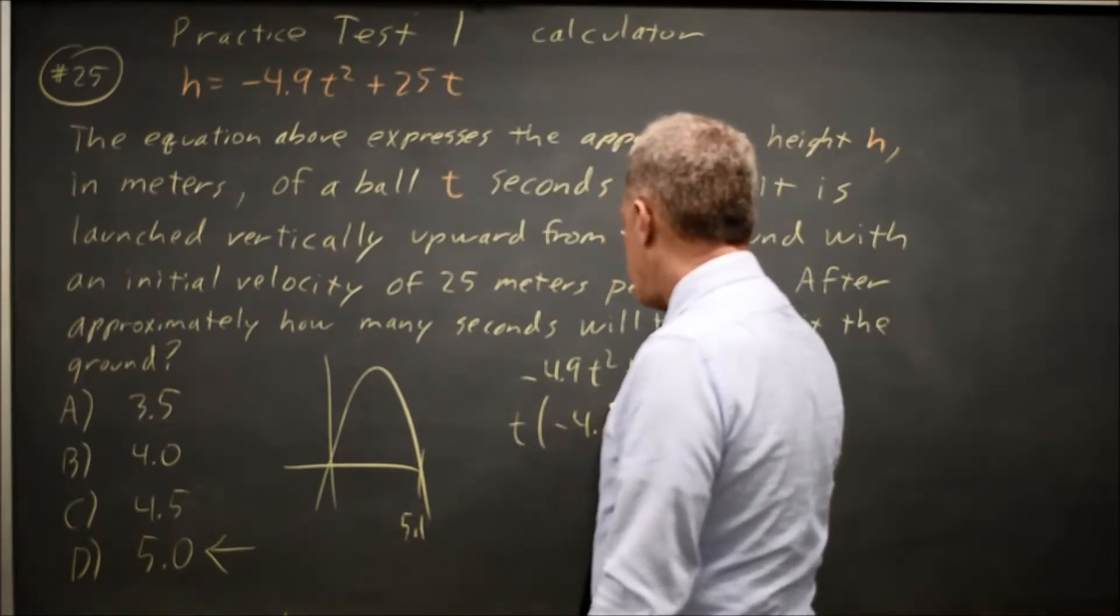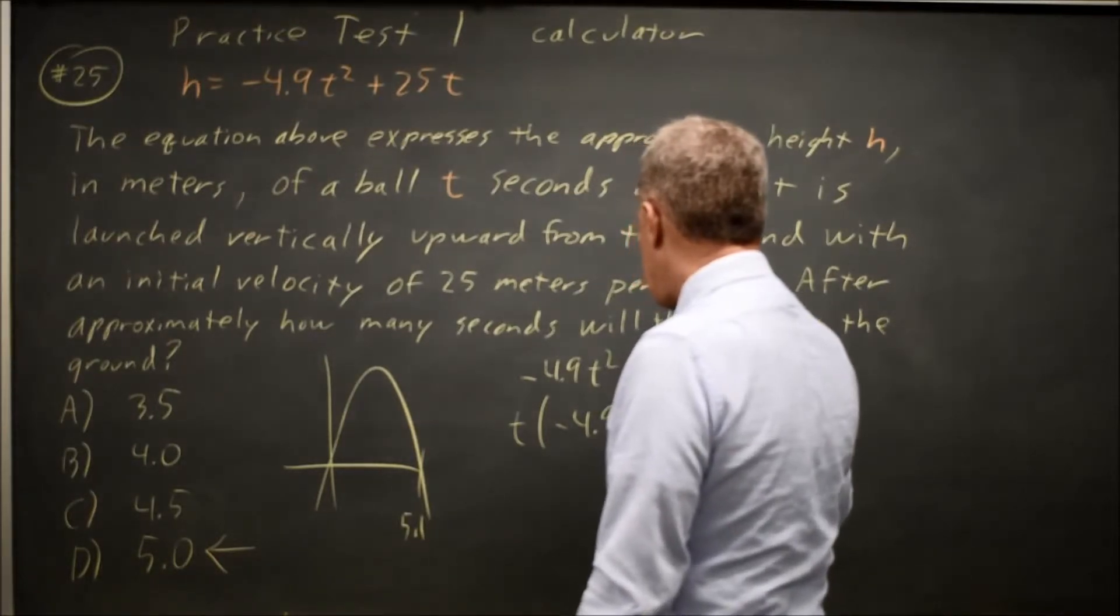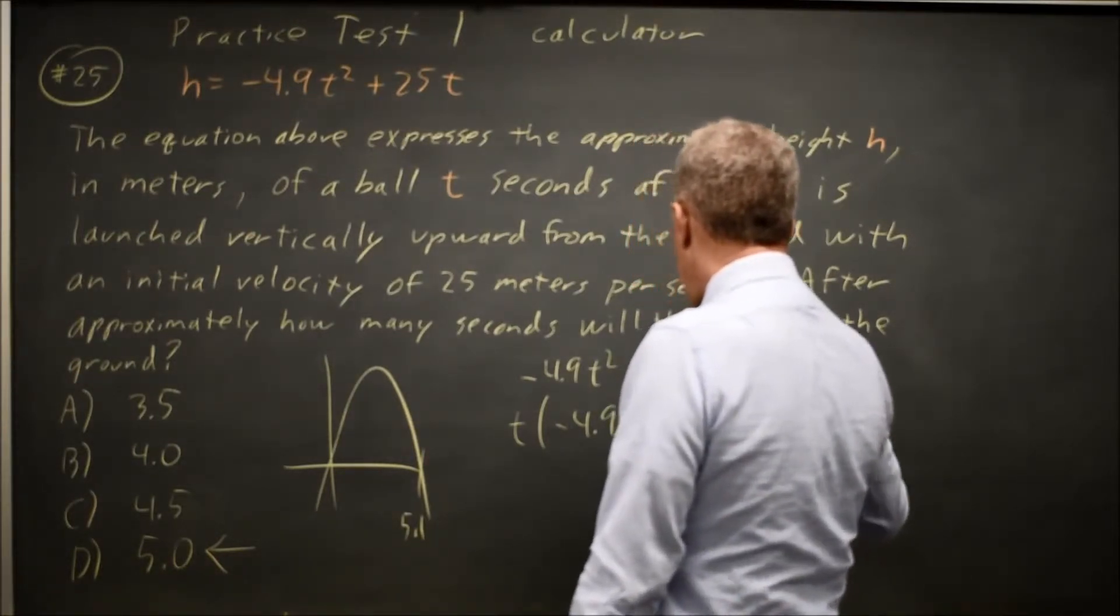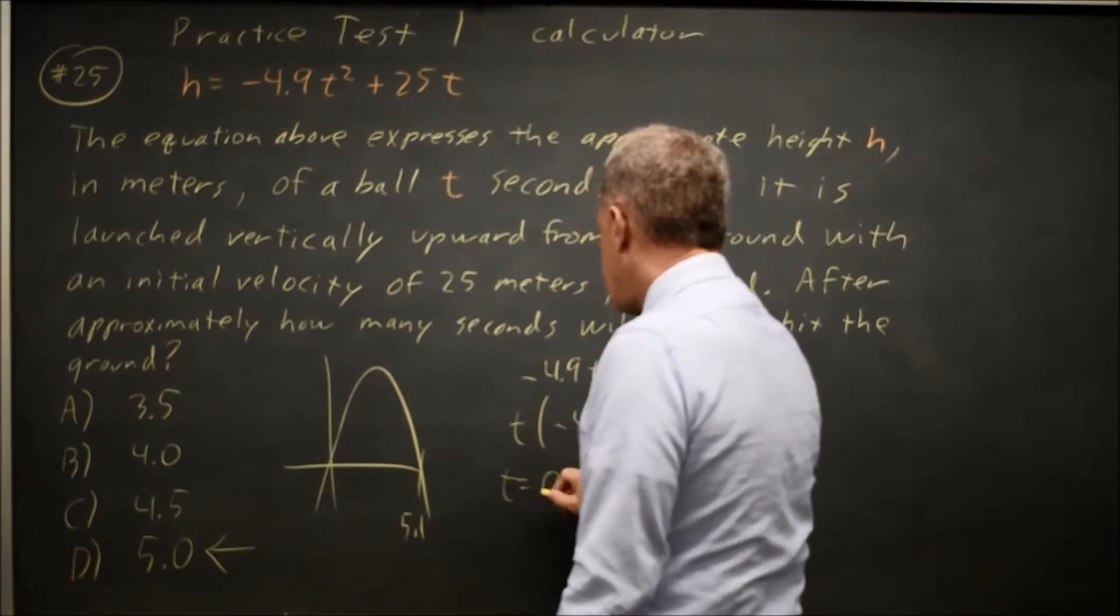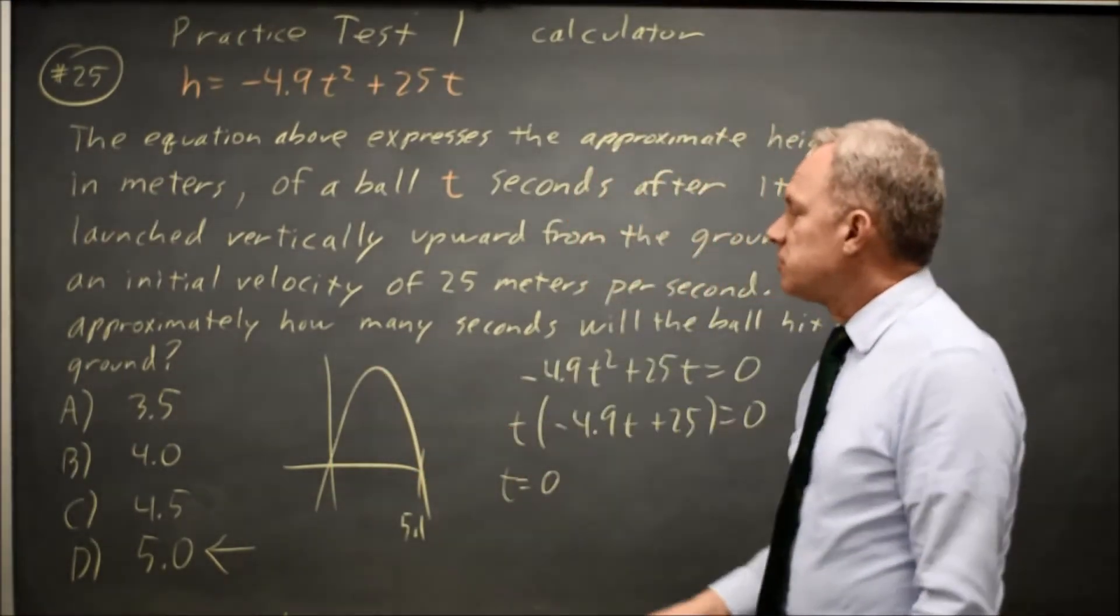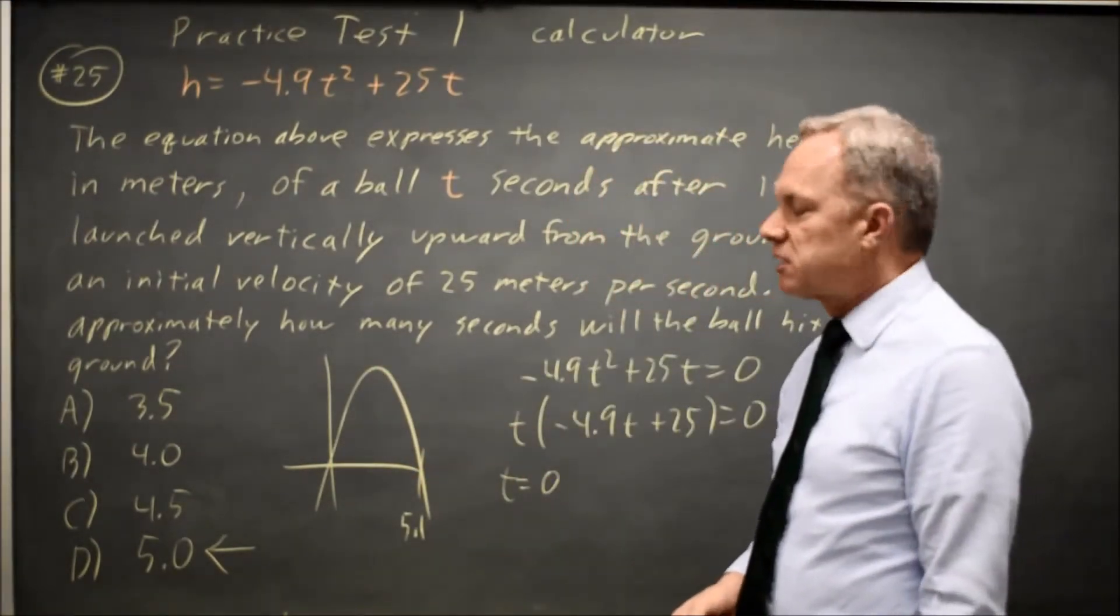t times negative 4.9 t plus 25 equals 0. So either the first factor equals 0, t equals 0, which is not an answer choice and also doesn't make sense in the context of the problem.